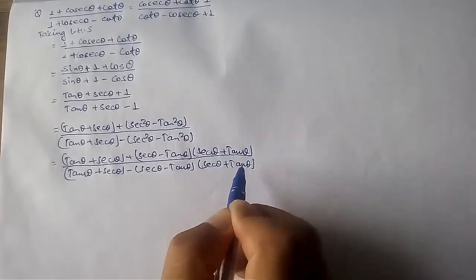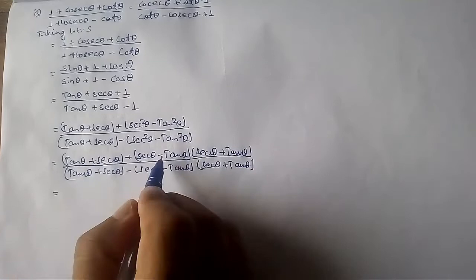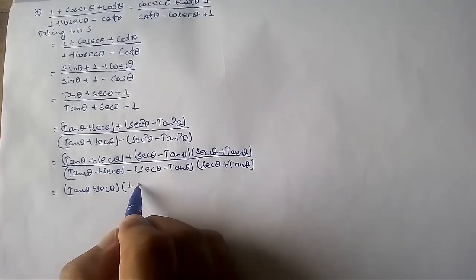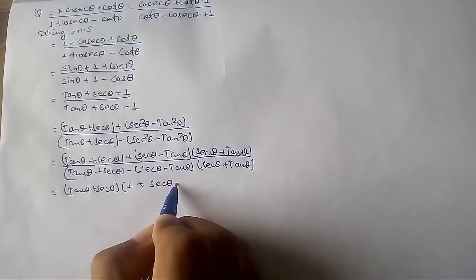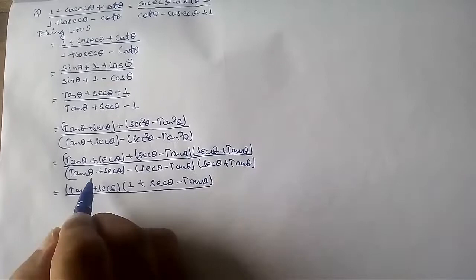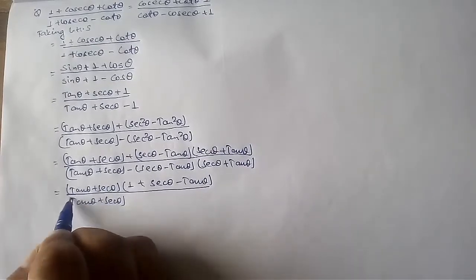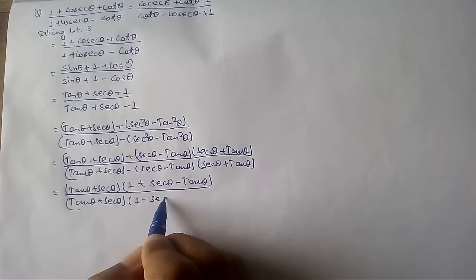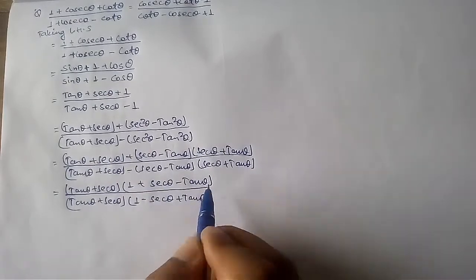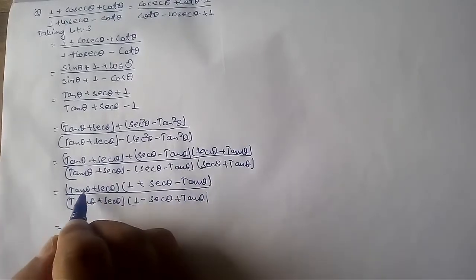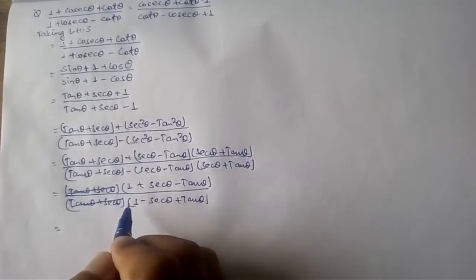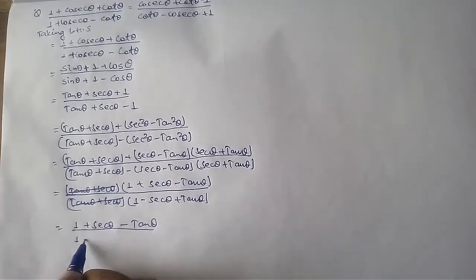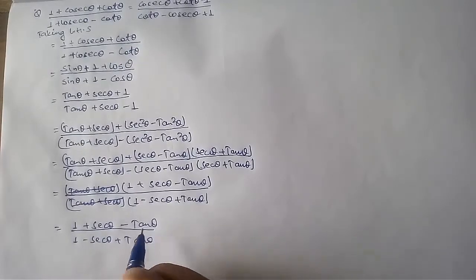We see that in both the numerator and denominator, tan theta plus sec theta is a common factor. In the first expression, after factoring out tan theta plus sec theta, we are left with one plus sec theta minus tan theta. In the denominator, after factoring out tan theta plus sec theta, one minus sec theta plus tan theta remains. Since tan theta plus sec theta is common, it cancels, leaving 1 plus sec theta minus tan theta divided by 1 minus sec theta plus tan theta.